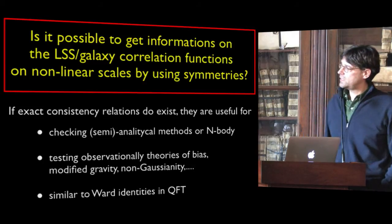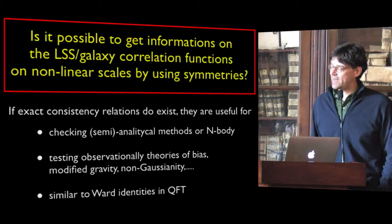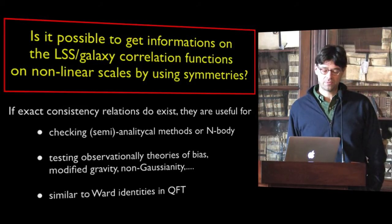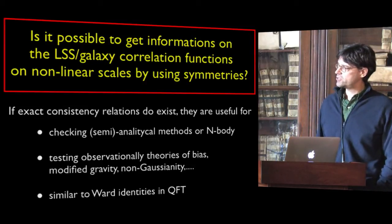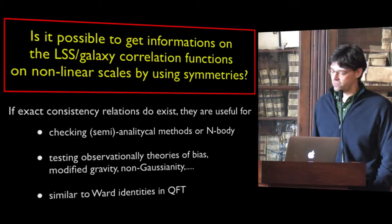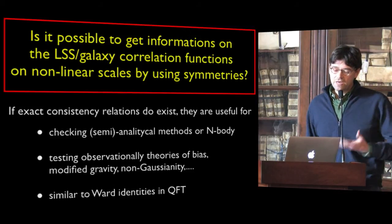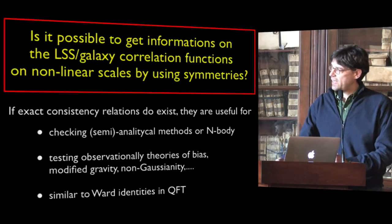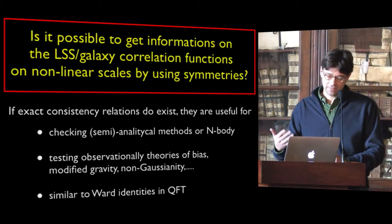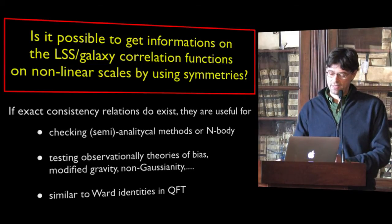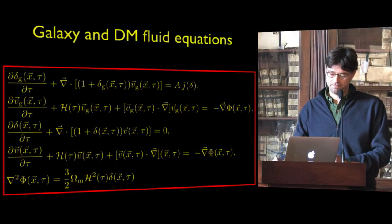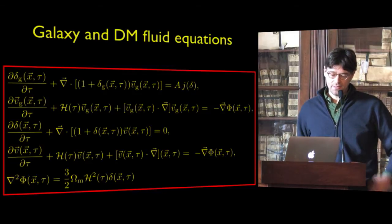Of course it also gives a way of testing what people are up to in cosmology — for instance the theory of bias, the way you relate the galaxies we observe to the underlying dark matter distribution which we cannot observe directly. We can test modifications of gravity at large distances, related to the acceleration of the universe, or test the initial conditions of the universe like non-Gaussianity. These consistency relations are, in the quantum field theory language, Ward identities.